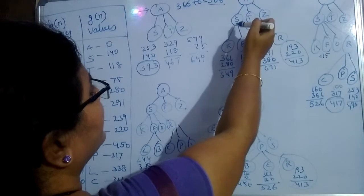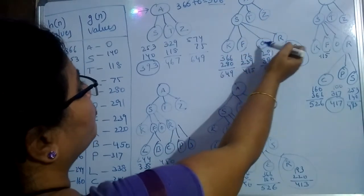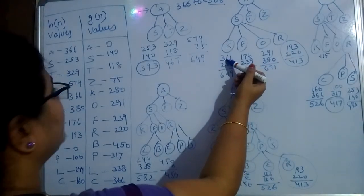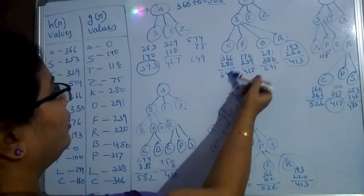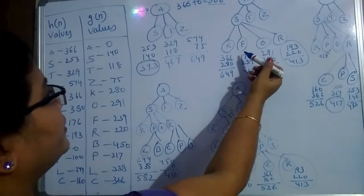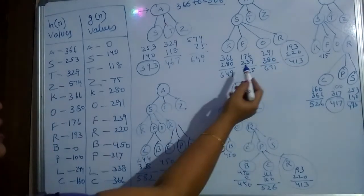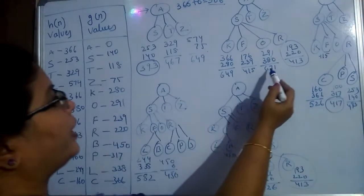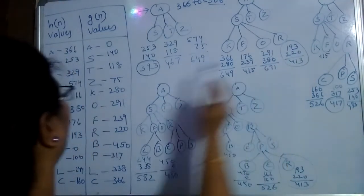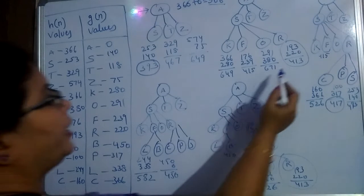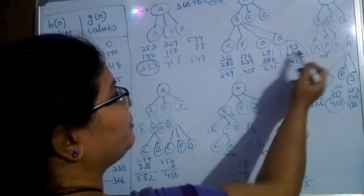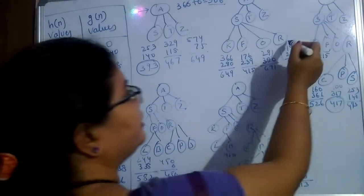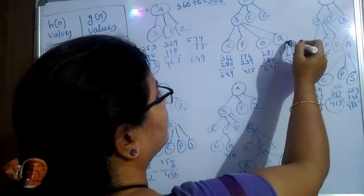A, S, T, Z. In the S, I expanded K, F, O, R. So what is the value at H of N? K is equal to 366, 280, here we got. In the F, F also 176, 239, I have added 415. And O value, 380, 291, I added 671. R, 193, 220, I added 413. So which one is minimum among all is 413. I have selected this node in this level.